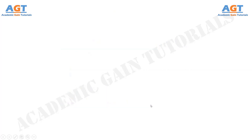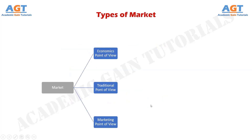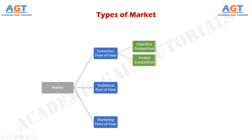Types of market: market can be classified based on the economics point of view, traditional point of view, and the marketing point of view. Based on the economics point of view, market can be classified based on imperfect and perfect competition.